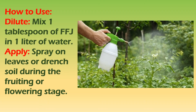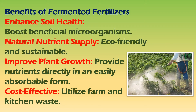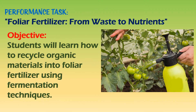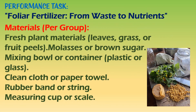Fermented fertilizers like FPJ and FFJ enrich the soil with essential nutrients and beneficial microbes, promoting healthier plant growth. They improve nutrient uptake, enhance soil fertility, and stimulate plant immunity. These natural fertilizers are eco-friendly, boost plant vitality, and are easy to make from readily available materials. For your performance task, you will create your own fermented fertilizer — choose either Fermented Plant Juice (FPJ) or Fermented Fruit Juice (FFJ).